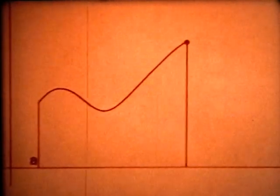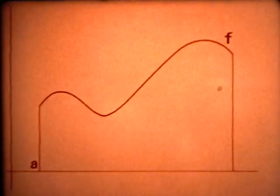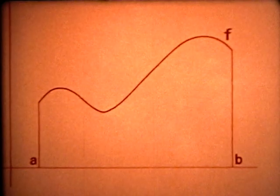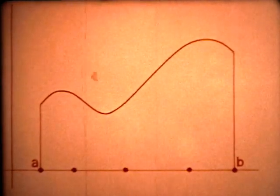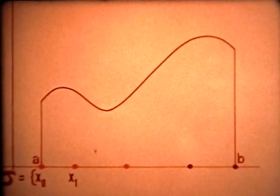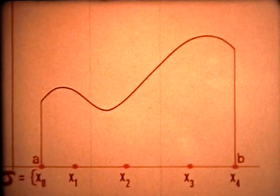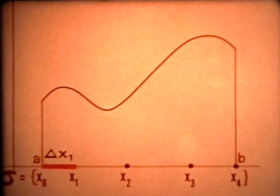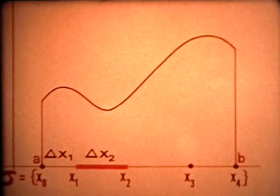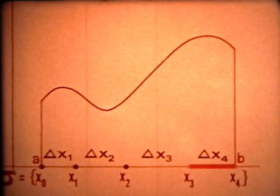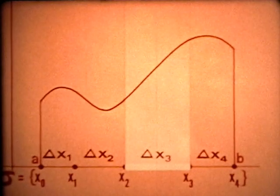To illustrate the procedure, let's use a bounded positive continuous function F on a closed interval. To approximate the area under the curve, we introduce a partition called sigma, in which X0 is the point A and the last point is B. The lengths of the subintervals in this partition are written delta X1, delta X2, and so on. The length of the longest subinterval will be called the norm of sigma.